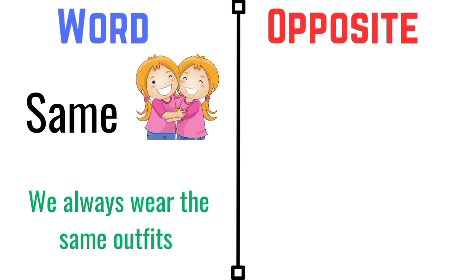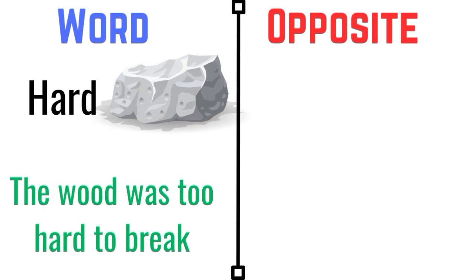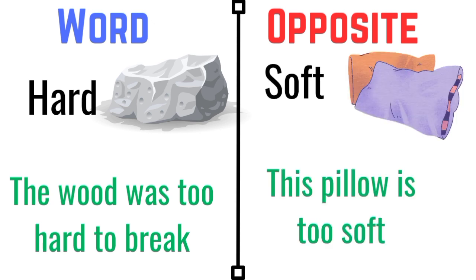Same. We always wear the same outfits. The opposite of same is different. We have different hobbies. Hard. The wood was too hard to break. The opposite of hard is soft. This pillow is too soft.